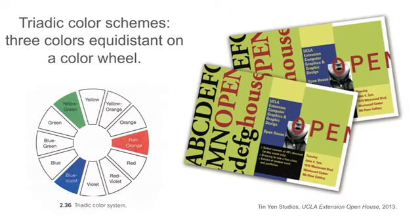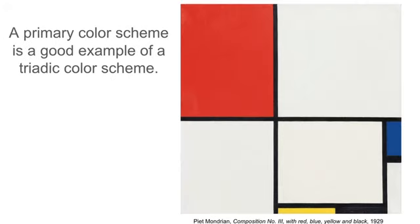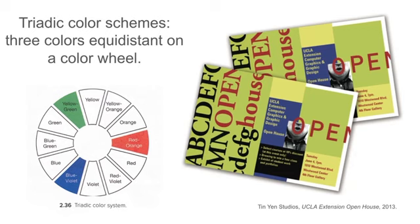Here's another color scheme that's pretty useful, a triadic color scheme. This uses three colors that are equidistant on the color wheel. And we have a great example here. A primary color scheme, red, blue, and yellow, is a great example of a triadic color scheme. Because if you look back at the color wheel, blue, yellow, and red are equidistant on the color wheel.